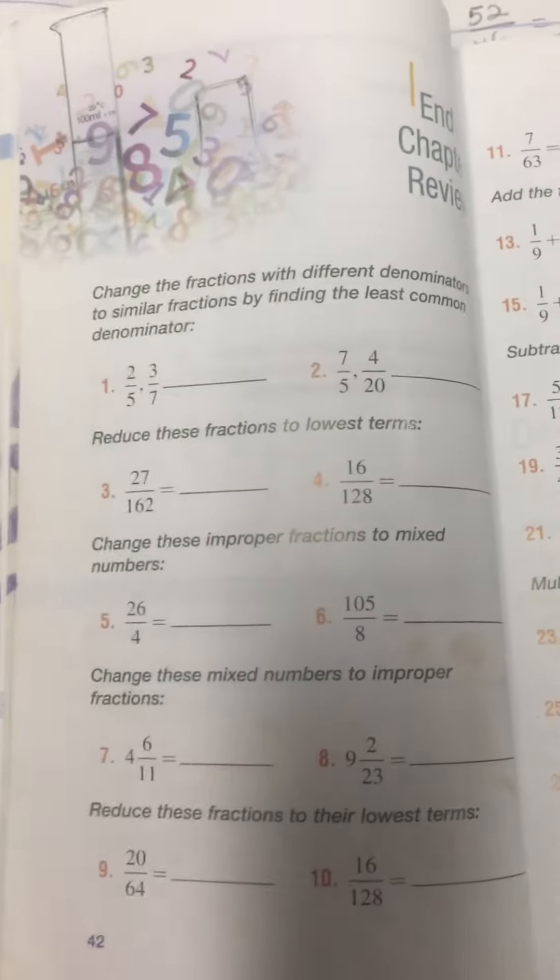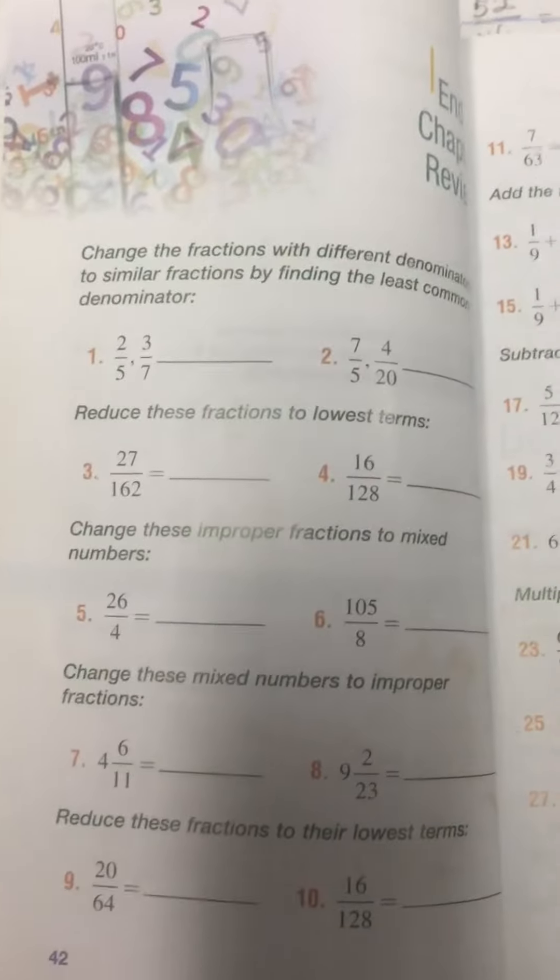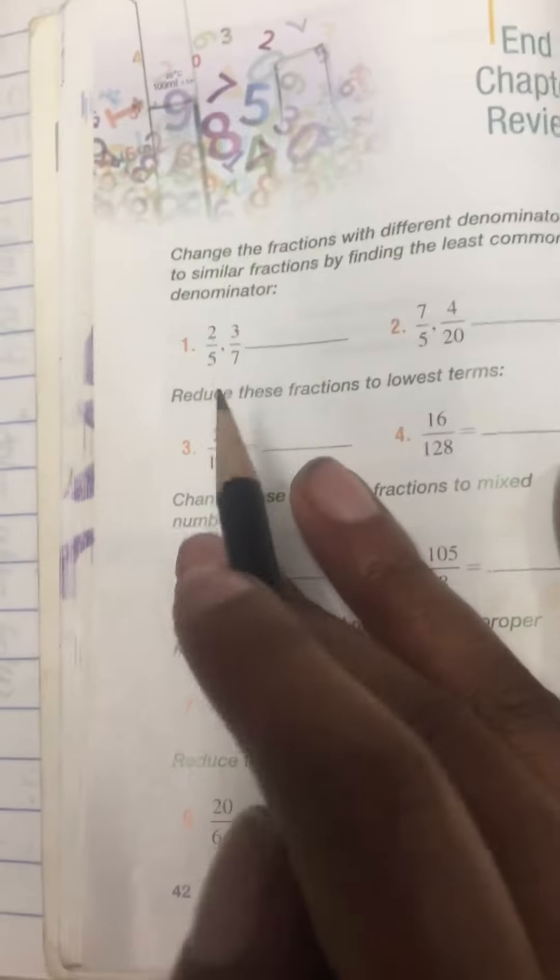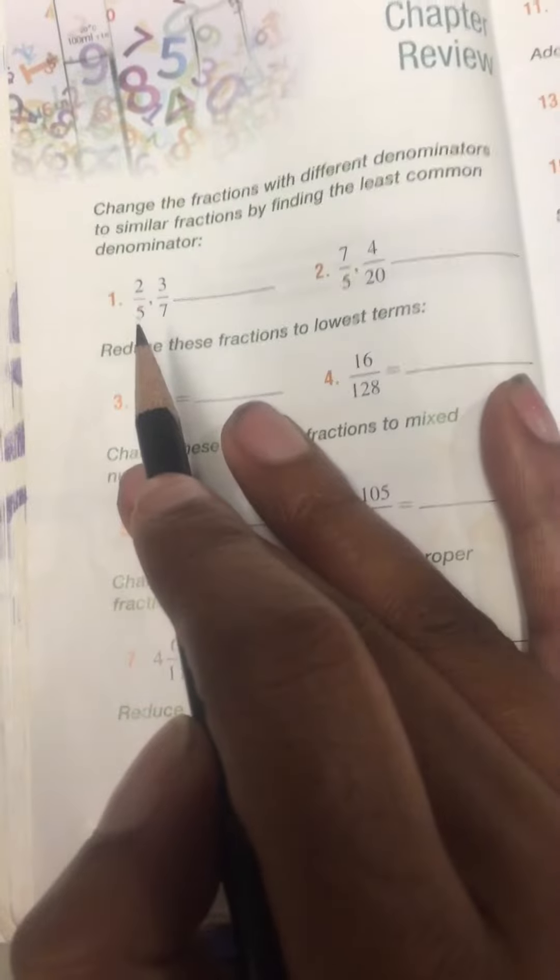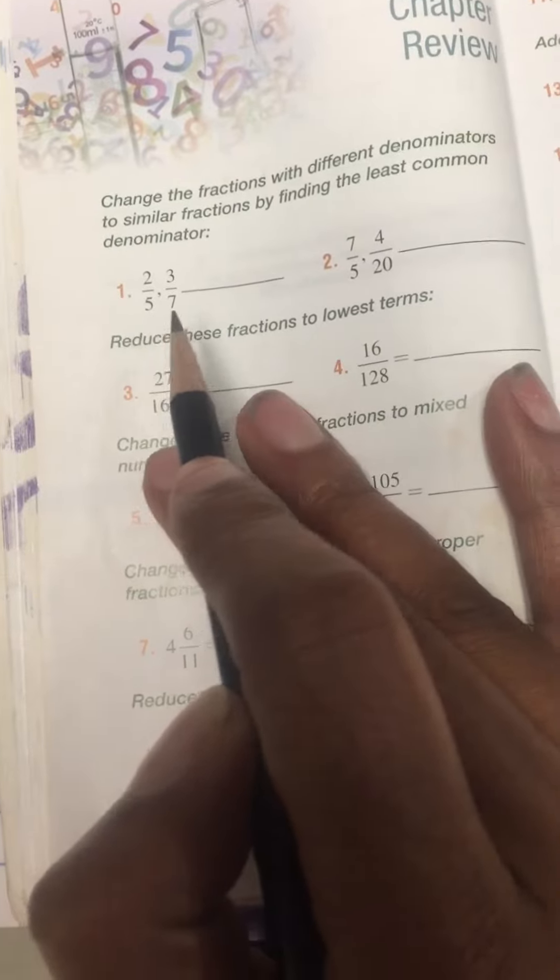So for number one, if you have two-fifths and three over seven, I want you to first do your timetables, your five timetables and your seven timetables. Tell me what they have in common, which is 35. So I will write this one over here just to make sure you have a clear understanding.